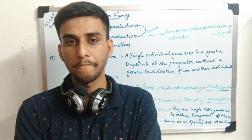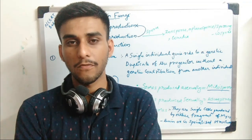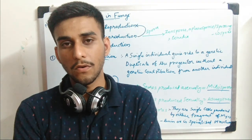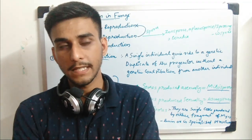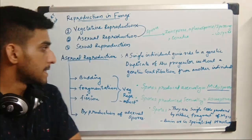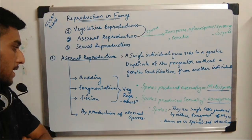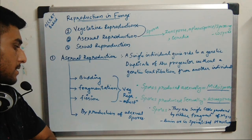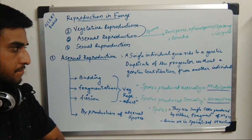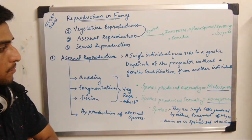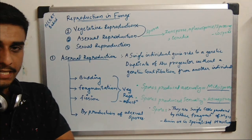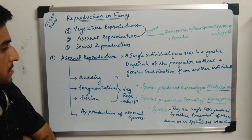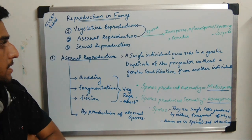Vegetative reproduction is a type of asexual reproduction in which a single parent is involved. Fungi which reproduce vegetatively can do so by three methods: first is by budding, second is by fragmentation, and third is by fission.